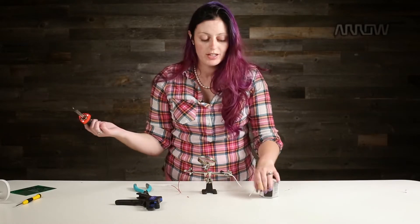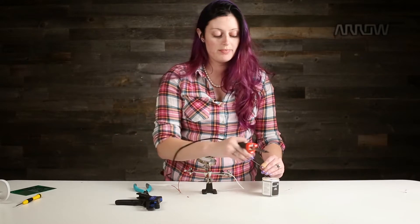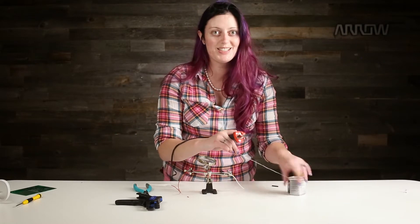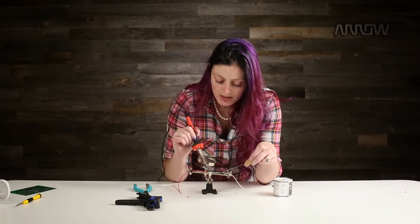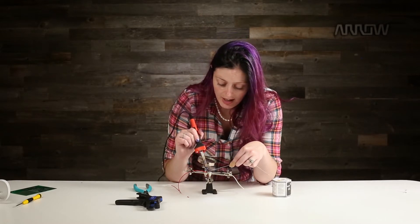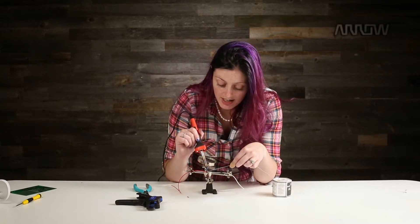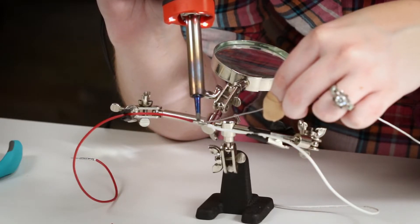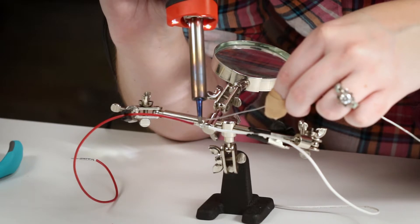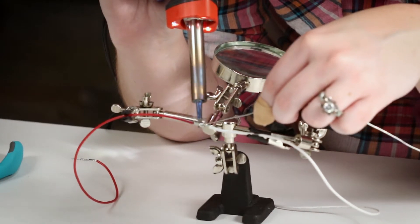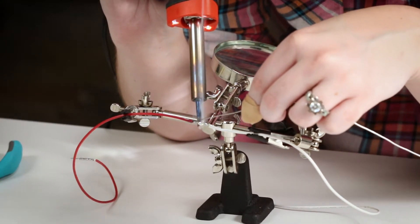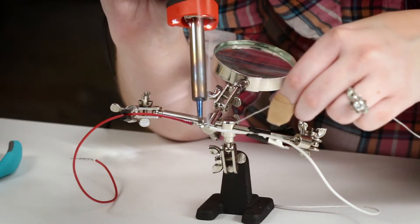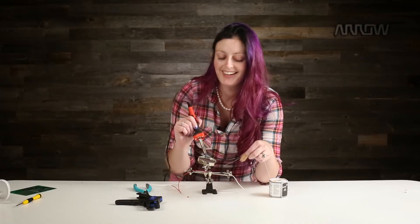Use the iron to heat the joint for at least one second, and then start touching the solder to the other side of the joint. So one one-thousand, and then start putting that solder in. It's not going to melt straight away, but you can see it starts getting sucked in towards that heat source. If you do it on the same side as the iron, you're more likely to just end up with a big ball of solder that's only connected to one of the wires and not very useful.